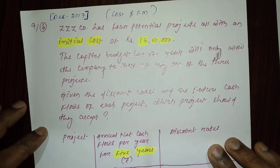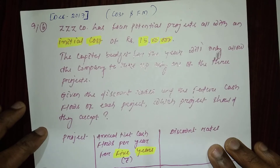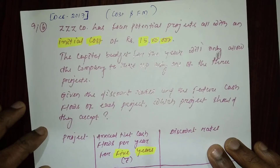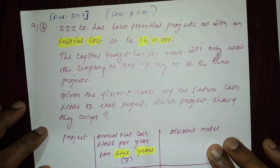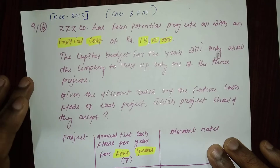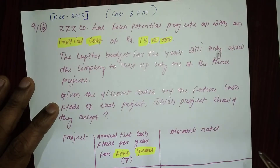Hello friends, in this video I would like to show you how to calculate net present value of an annuity. This question already comes in December 2017 exams of Cost and Financial Management, Intermediate Group One. Z Z and Co has four potential projects, all with an initial cost of rupees 15 lakh.